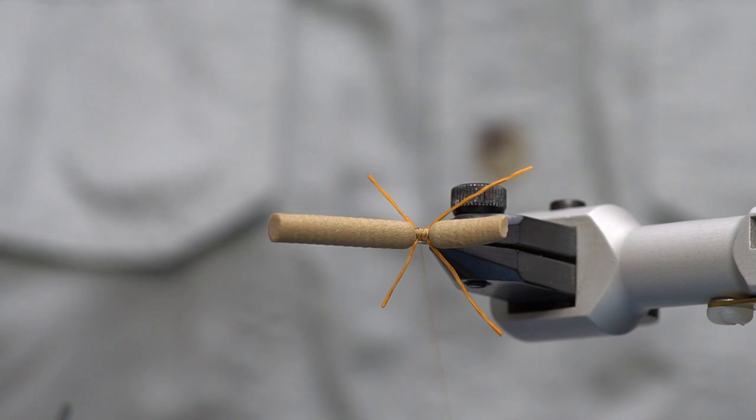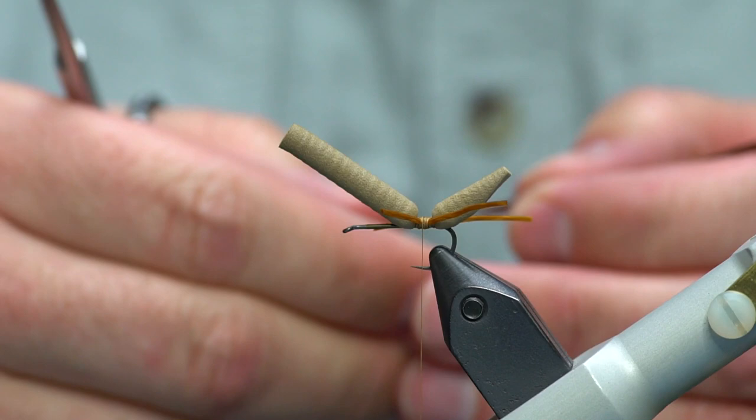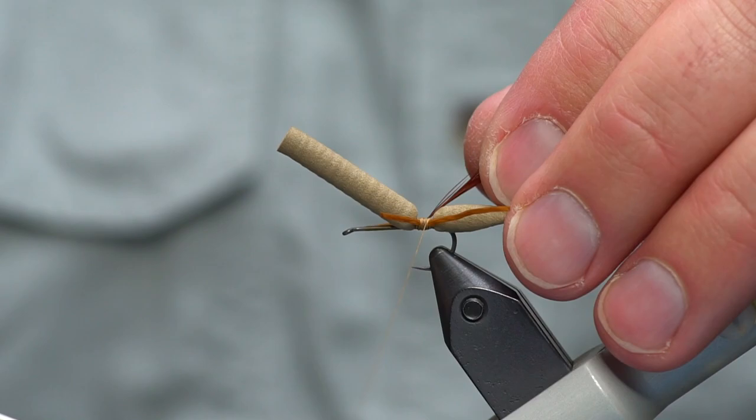Okay, so now we have our legs in place. Next up we're going to add the hackle, which is a Coachman brown hackle. I really like Coachman. If you look at this stuff in the light, it really lights up, turns kind of a bright reddish brown color. I'm going to prep just the bottom of this hackle and then we'll tie it in here right in the segment between the legs.